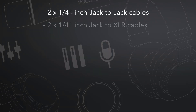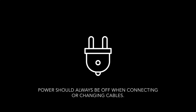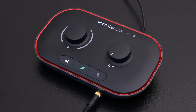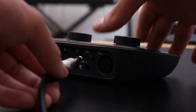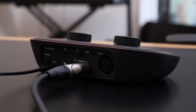We recommend using balanced TRS quarter-inch jack cables for the best results. Ensure your speakers are connected to power but don't switch them on just yet, as this can cause damage to your speakers when connecting cables. Making sure that the monitor dial on your Vocaster is turned down, connect one end of your audio cable to the left socket on the back panel of your Vocaster.